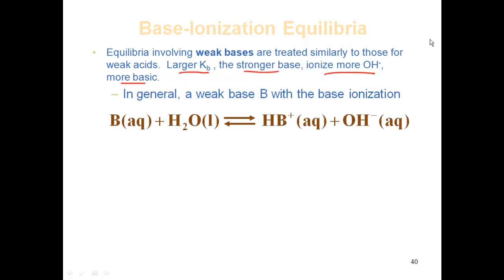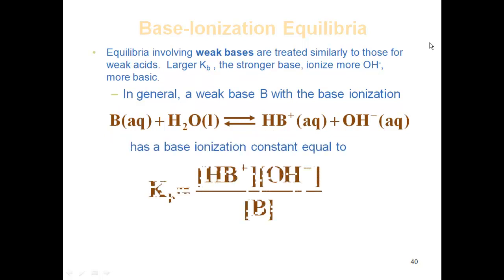Generic expression: anytime you're doing a base, you should be able to write base hydrolysis. If you know something is the base, the water has to be the acid, so the proton is going to be donated. It's coming over with an H plus, so if it was neutral before, now you've gained that H plus — now I have HB plus. I lost the H plus from water, now I have OH minus. Set up my expression: products over reactants — HB plus concentration times OH minus concentration, divided by concentration of B. We refer to that as a Kb.